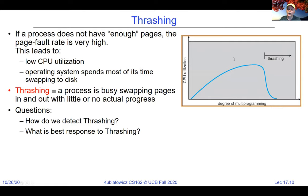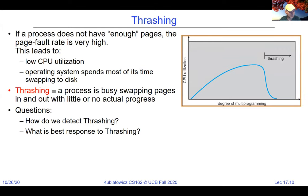If you have a single thread doing bursts of IO followed by bursts of computation, when it's doing IO you get zero CPU utilization. You want enough threads so that somebody can always be computing while the rest are sleeping on IO. For which processes to page out — maybe pick the one with the most pages so the others can run.